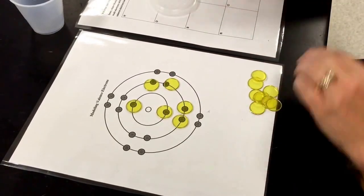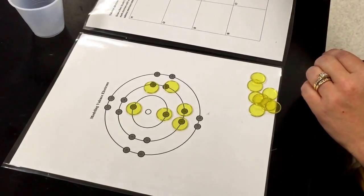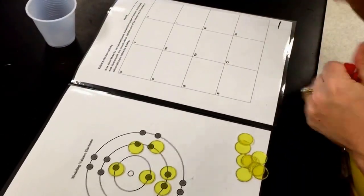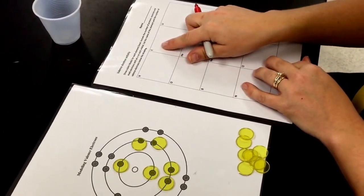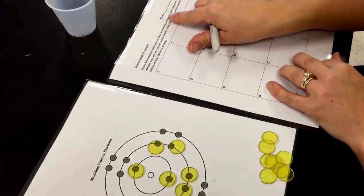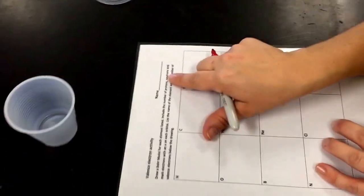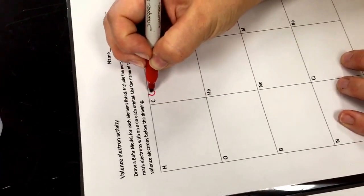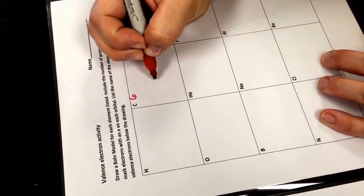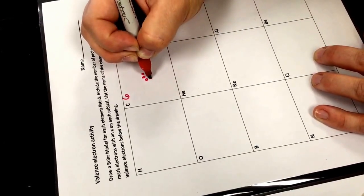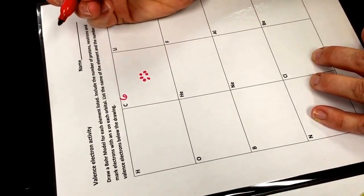The last thing you need to do is to draw this model on your paper with your dry erase marker. Find your box C for carbon. I'm going to draw the number of protons, neutrons, and electrons. The atomic number of carbon is 6, so I'm going to draw 1, 2, 3, 4, 5, 6 protons.